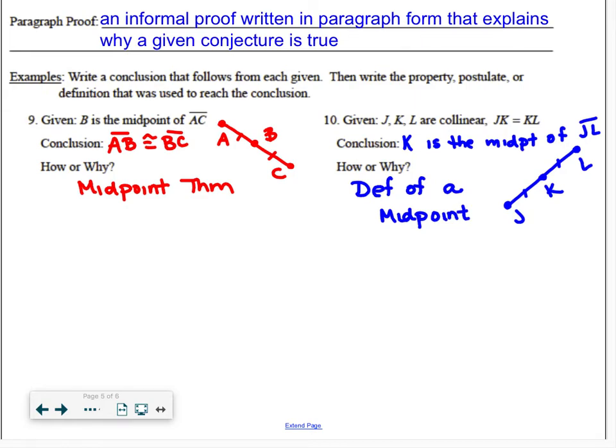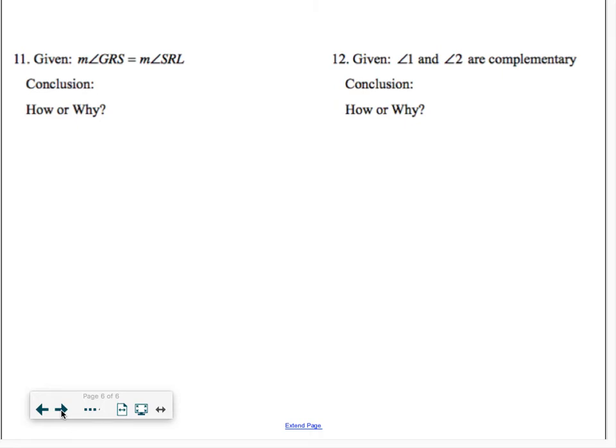We'll go over the difference between these two things again, but be very careful. They seem similar, but midpoint theorem and definition of midpoint are actually two different justifications. Question number 11. When we're given that two angles are congruent, if I know two angles have equal measure, that means those two angles must be congruent. So for my conclusion, I'm going to say angle GRS is congruent to angle SRL. The justification is the definition of congruence. What does it mean for two angles to be congruent? It means they have the same measure.